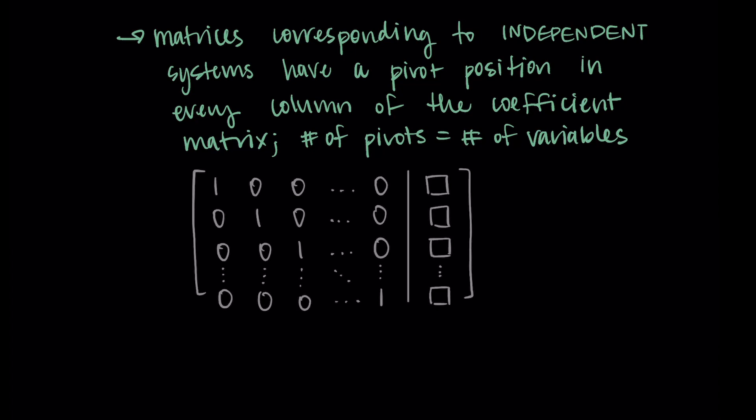If we think about a general matrix here, where we have the coefficient matrix on the left-hand side and then the augmented part on the right-hand side, the left-hand side has N columns. If it's going to be independent where there's one solution, every column should have one pivot so that there are N pivots. By having a pivot in every column, we can't have a row of all zeros. So we know that every variable has some sort of value assigned to it, and we're getting a unique solution, one solution to the system.